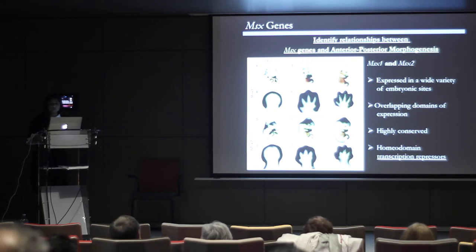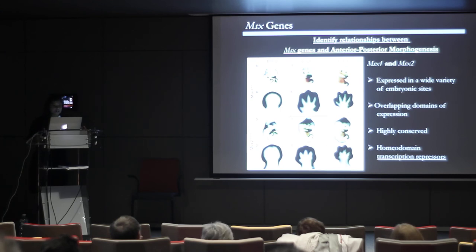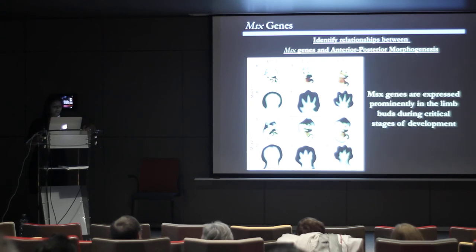MSX1 and MSX2 are expressed in a wide variety of embryonic sites. As you can see during embryonic development of E11.5 to E13.5, they are expressed globally in the embryo. Of interest, MSX1 and MSX2 also show overlapping domains of expression, and they are expressed in the developing limb during critical stages of development. They are highly conserved homeodomain transcription factors and serve mainly as transcriptional repressors. I would like to stress that MSX genes are prominently expressed in the limb buds during critical stages of development in an overlapping fashion.